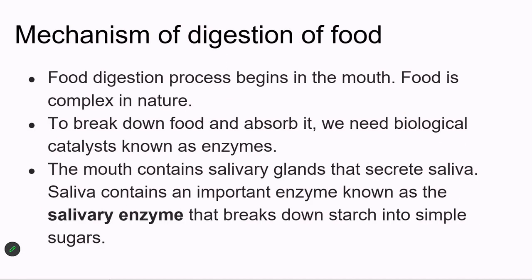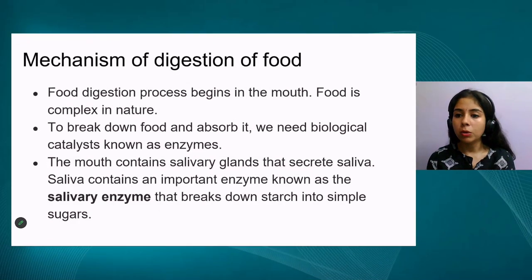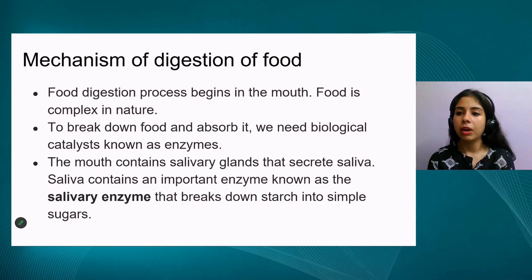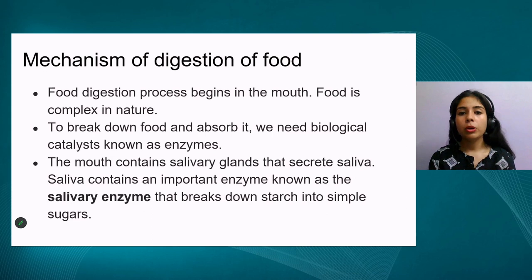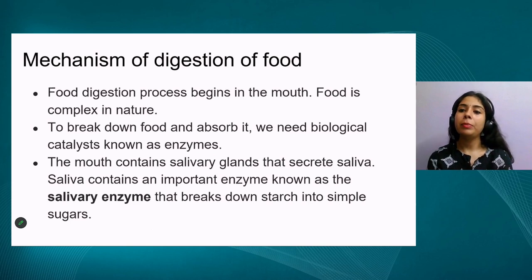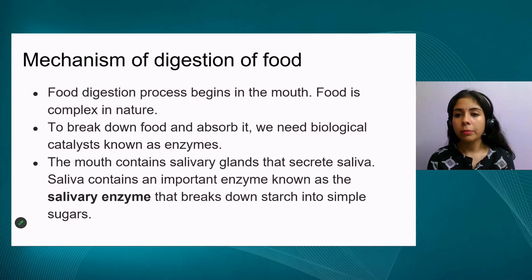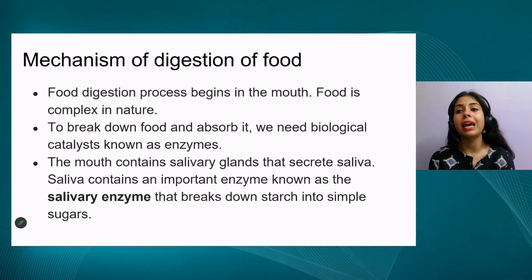The mechanism of digestion: food is taken in through the mouth, which has teeth, tongue, and salivary glands. The food is chewed, made into a paste, mixed with saliva, and passed down to the esophagus. Certain enzymes are mixed with the food in the mouth. Enzymes are known as biological catalysts — they help in increasing the speed of a reaction or carrying out a process.